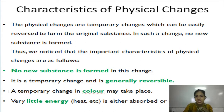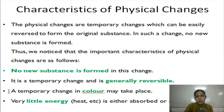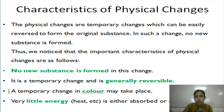Physical changes are temporary changes which can be easily reversed to form the original substances, and no new substance is formed. The four main characteristics of physical change are: no new substance is formed; it is a temporary change and generally reversible; a temporary change in color may take place; and very little heat or energy is either absorbed or evolved.